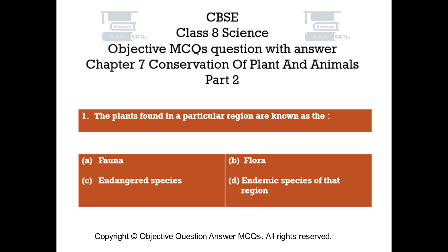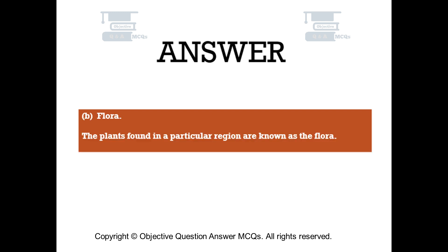Question number 1. The plants found in a particular region are known as: Option A Fauna, Option B Flora, Option C Endangered Species, Option D Endemic Species of that region. The right answer is Option B — Flora. The plants found in a particular region are known as the flora.